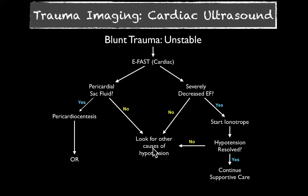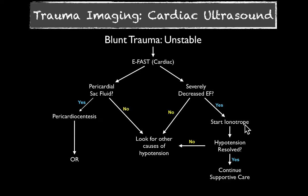If there's no pericardial sac free fluid, look for other causes of hypotension. One of those would be: is there a severely decreased EF? If the answer is still no, you keep looking. If there is a severely decreased EF, you need to consider starting an inotrope — maybe they need more of a kick. If the hypotension resolves, continue supportive care and look for other injuries. If it doesn't resolve, you need to look for other causes and continue with your eFAST exam.